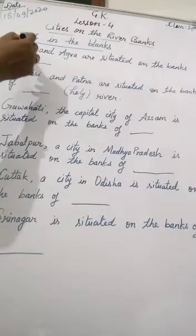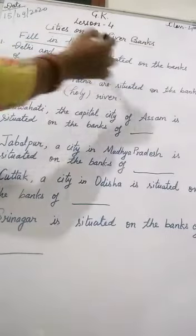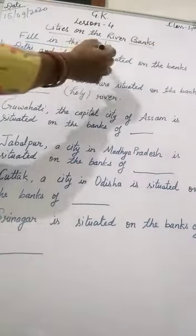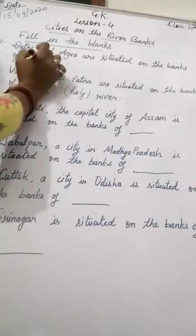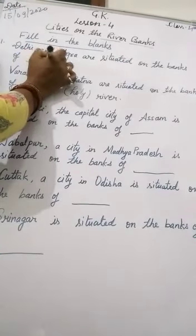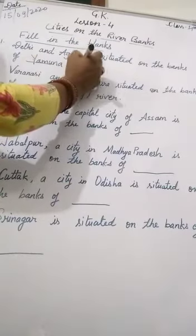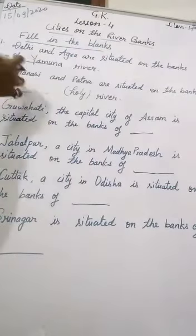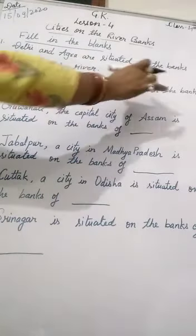First one: Delhi and Agra are situated on the banks of this river. You have to write here — Yamuna River.